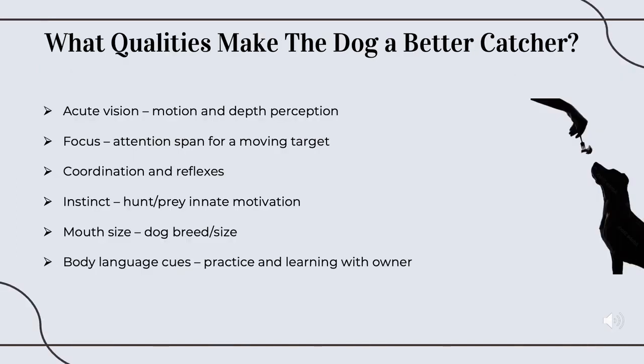For our last question, we were asked, as a team, what qualities we thought made a dog a better catcher. So, to start, we thought that the main one is a dog has to have acute vision. Of course, an older dog is going to have a harder time processing motion and depth perception than a younger dog. The second one is going to have a very good attention span for a moving target compared to throwing it and then going back to what it was doing.